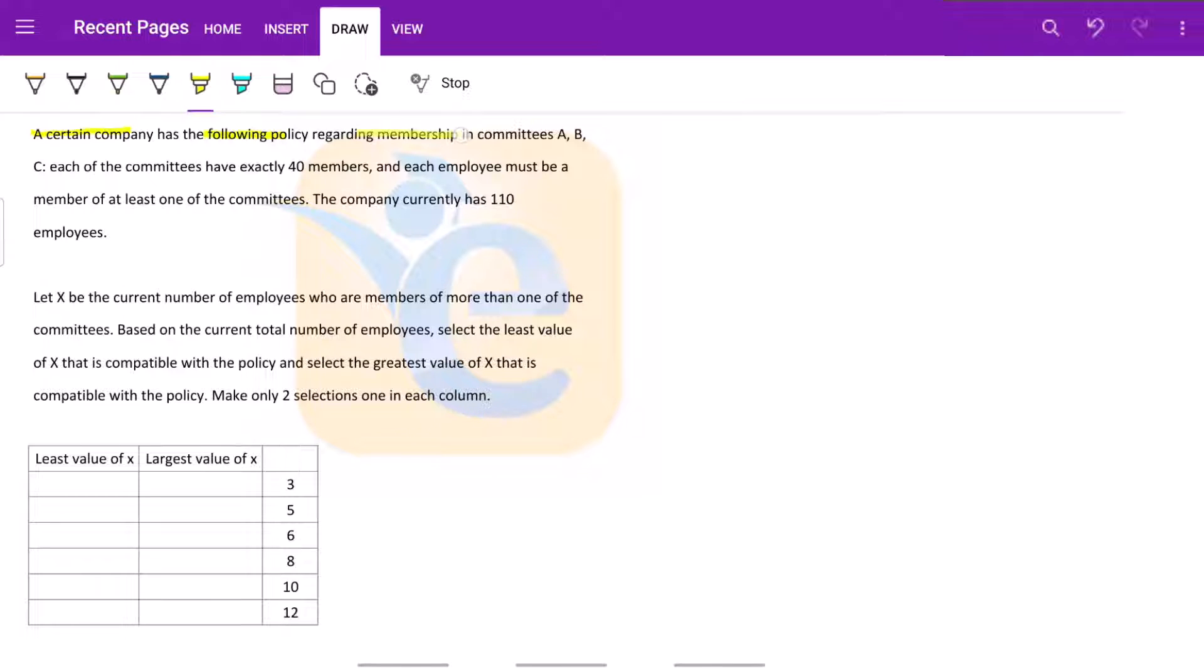A certain company has the following policy regarding membership in committees A, B, C. Each of the committees has exactly 40 members, and each employee must be a member of at least one of the committees. The company currently has 110 employees.